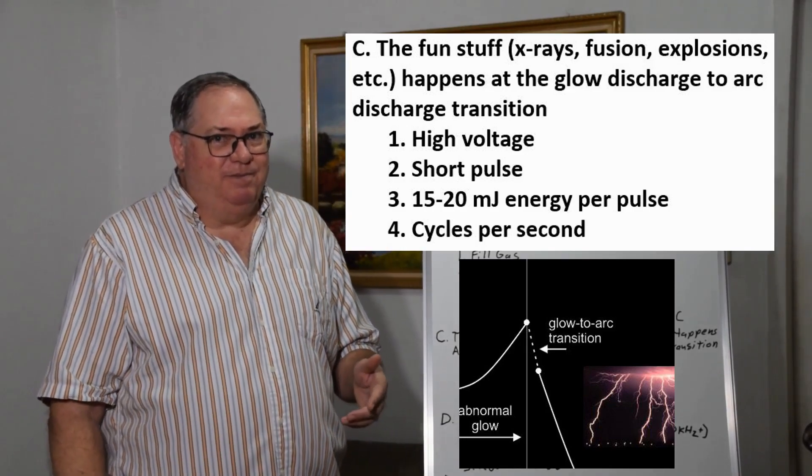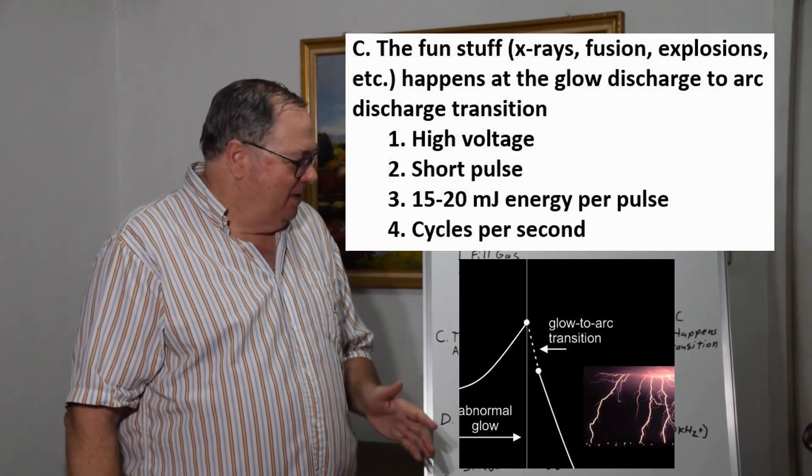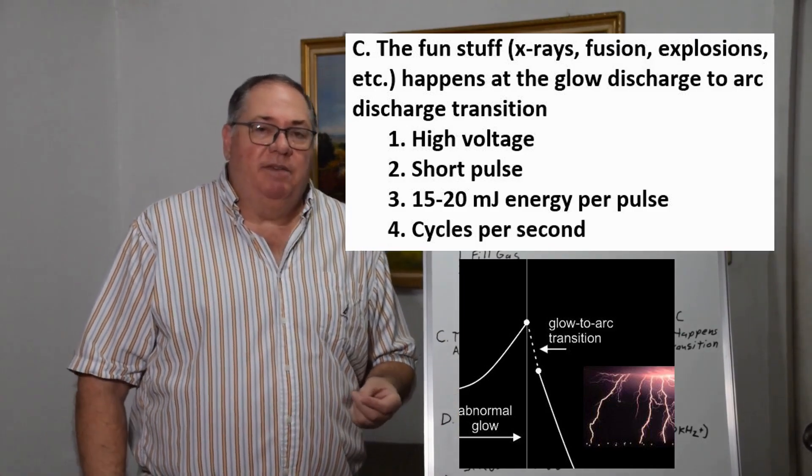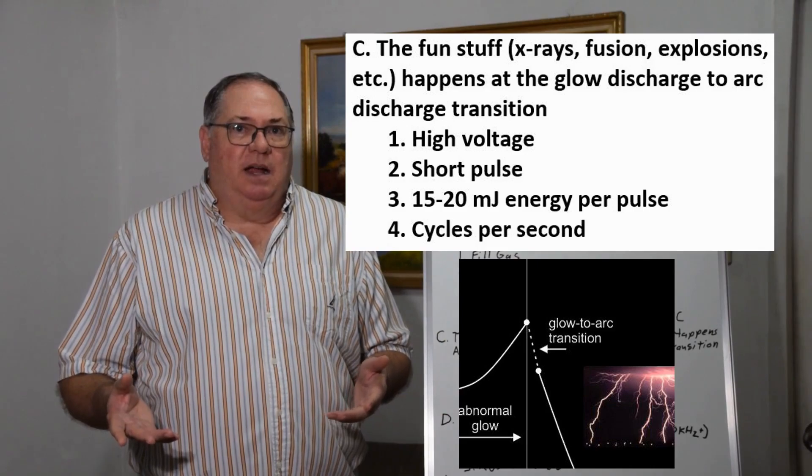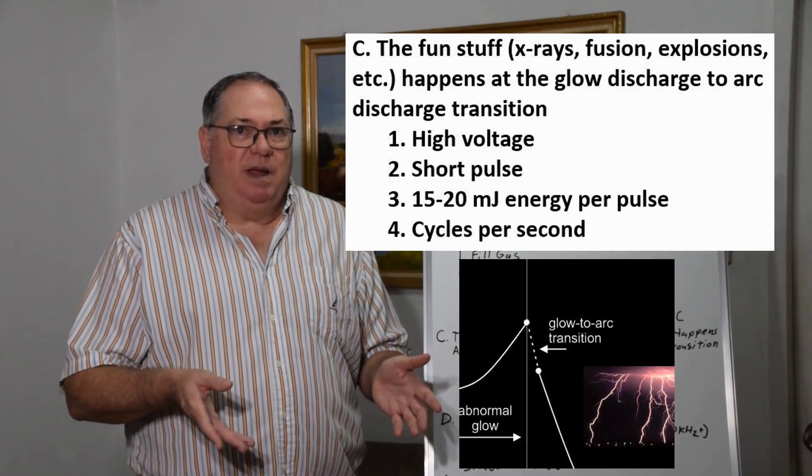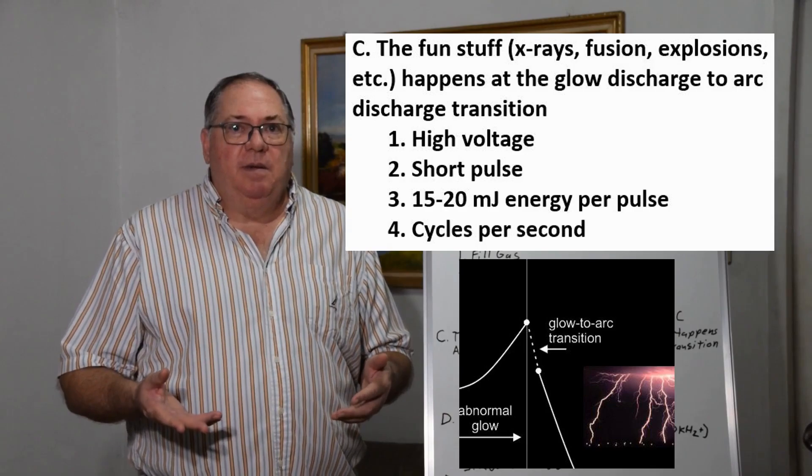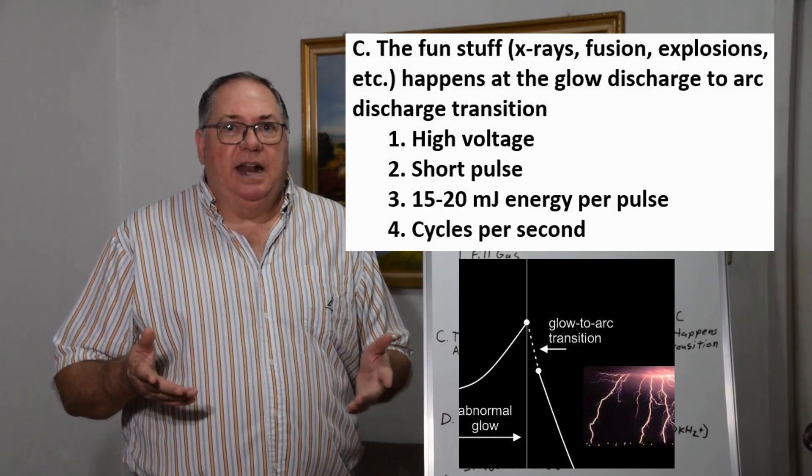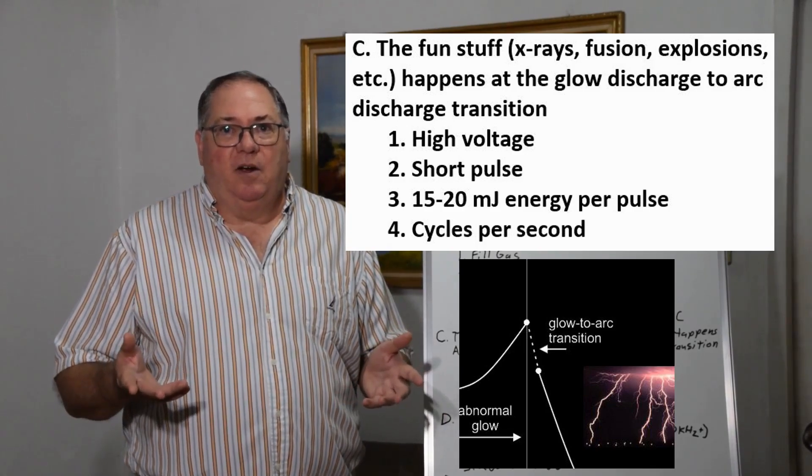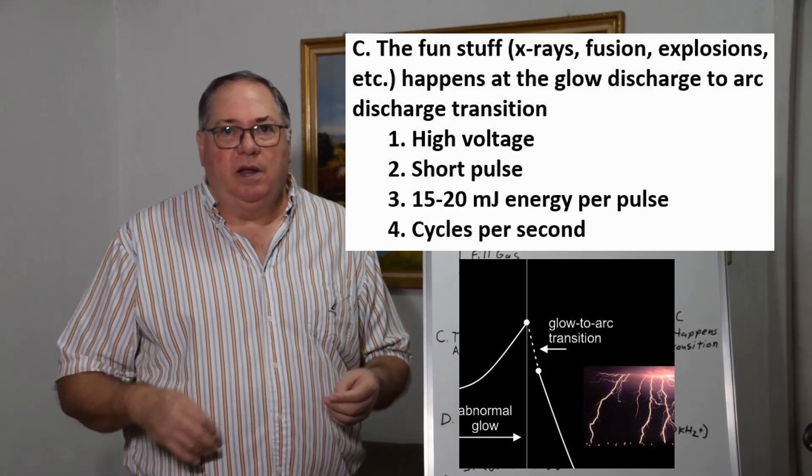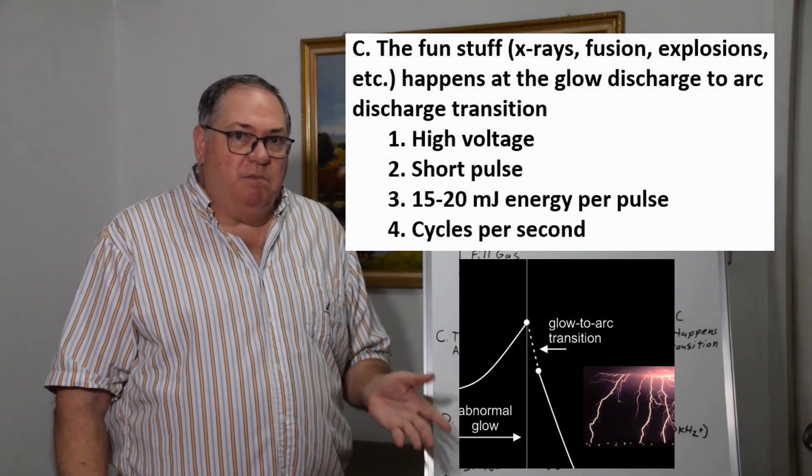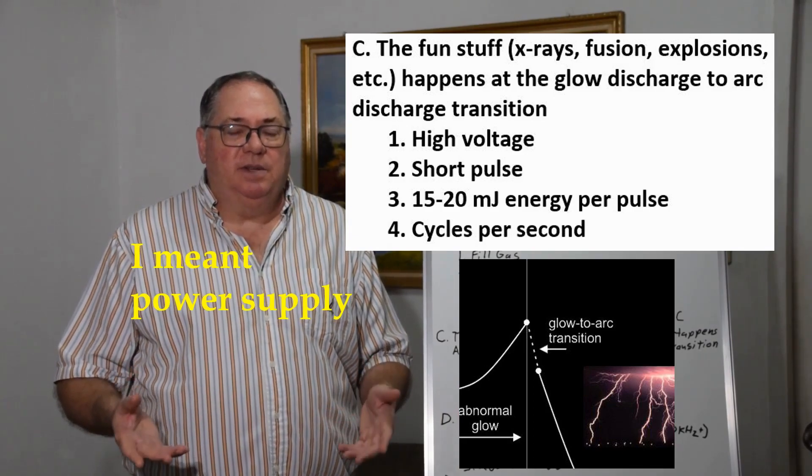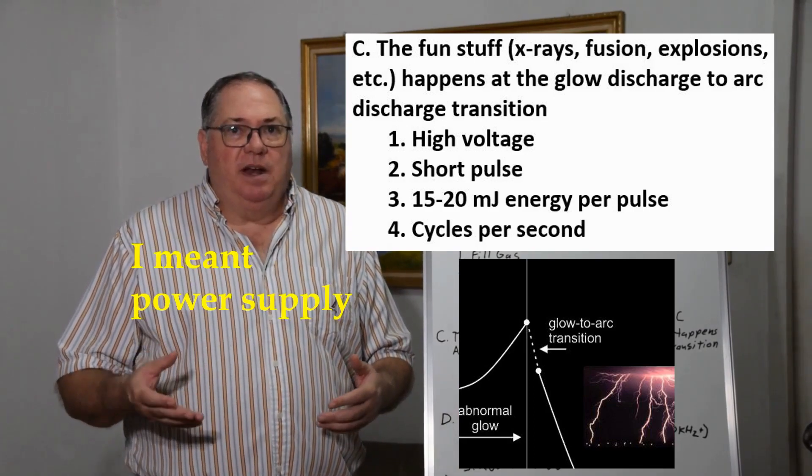The other thing is cycles per second. If you're running a transformer directly off main voltage at 50 or 60 hertz, you get 100 or 120 arcs per second with two cycles. For more arcs, run a transformer at higher frequency—at 20 kilohertz you could get 40,000 arcs per second.